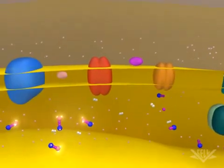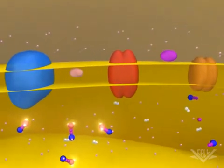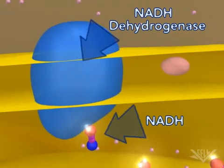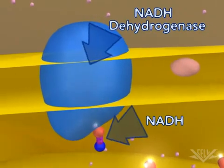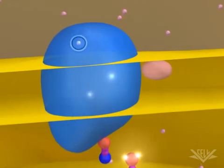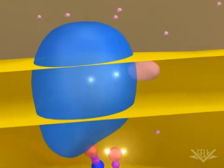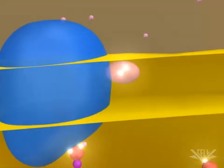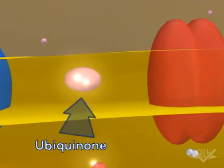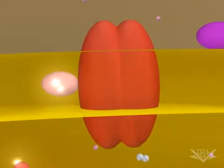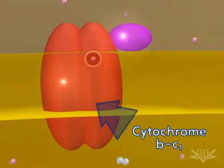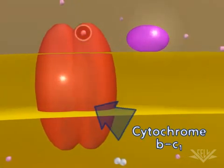At the start of the electron transport chain, two electrons are passed from NADH into the NADH dehydrogenase complex. Coupled with this transfer is the pumping of one hydrogen ion for each electron. Next, the two electrons are transferred to ubiquinone.